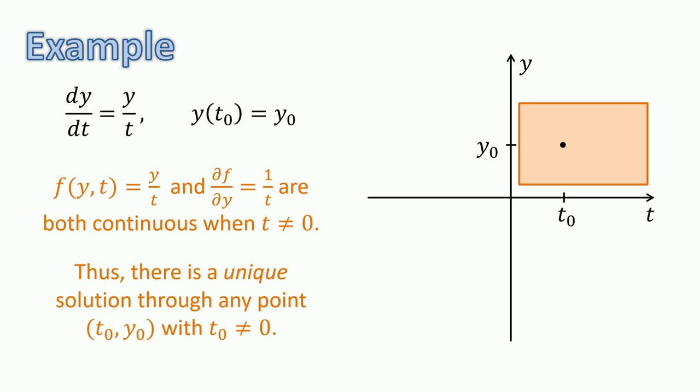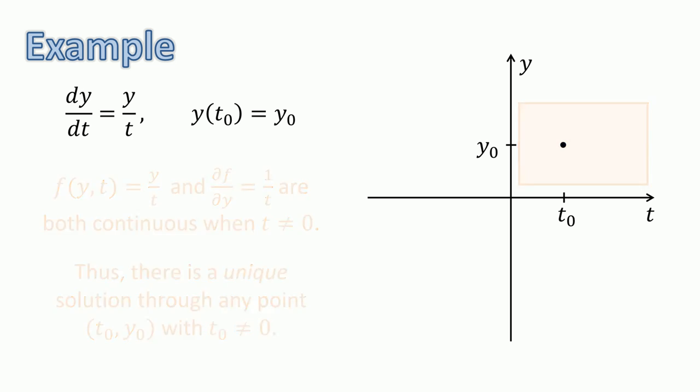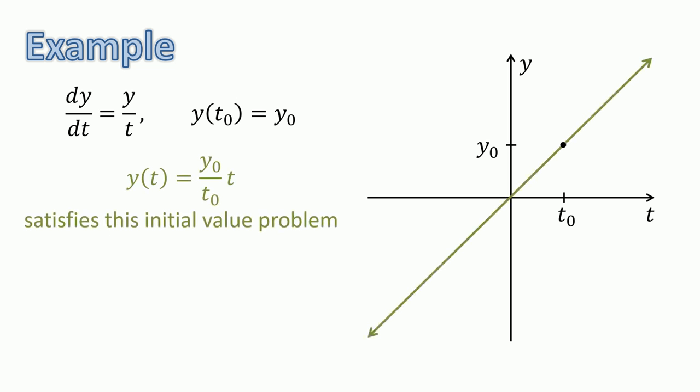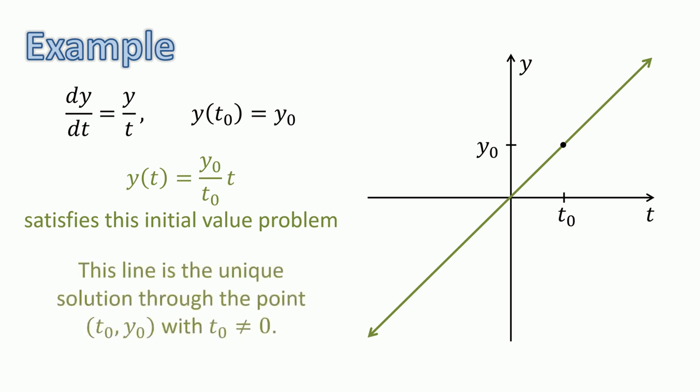What is this unique solution? Either by separating variables or making a good guess, we can see that y equals (y0 divided by t0) times t — this linear equation — satisfies the initial value problem. Thus, we now know that this line is the unique solution through any point (t0, y0) where t0 is not equal to 0.